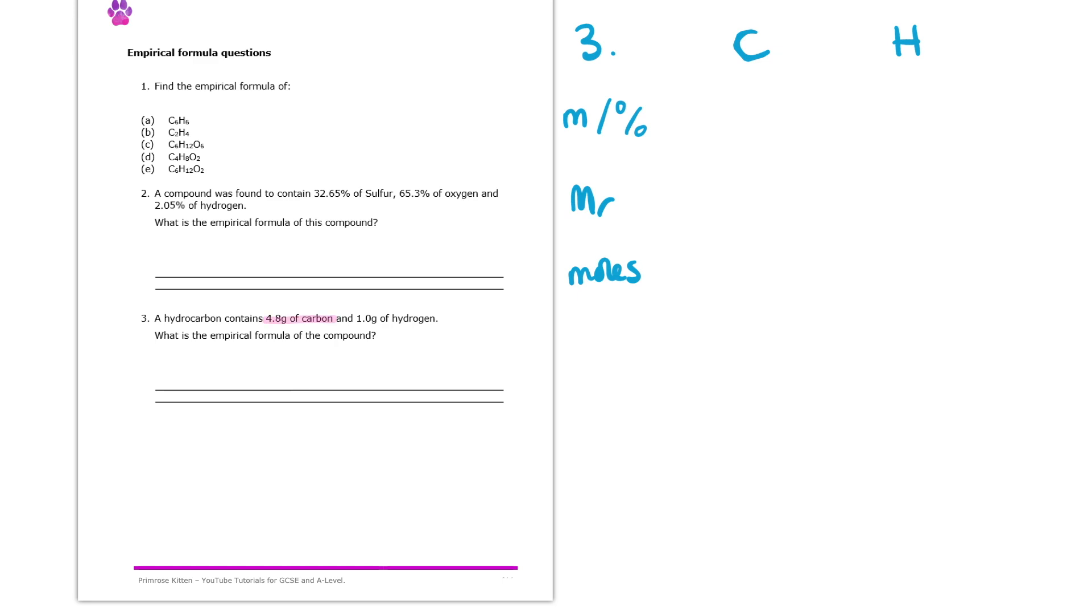So I know the mass is 4.8 grams of carbon, so I'm going to write 4.8 underneath the carbon. And I know that I have 1 gram of hydrogen, so I'll write 1 next to my hydrogen. Underneath, I would go to my periodic table and get the MR of both carbon and hydrogen. So that's 12 and 1. Then I would use those bits of information to calculate the moles. So 4.8 divided by 12 leaves me with 0.4, and that is the number of moles of carbon. And then for hydrogen, we just have 1 over 1, so we just get 1 for that.